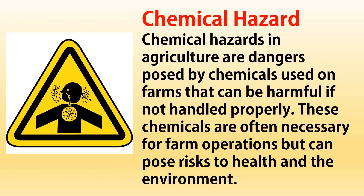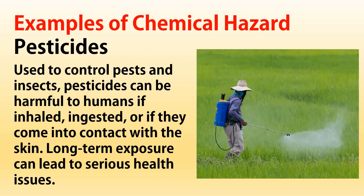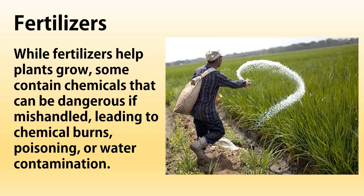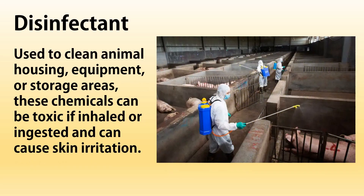Chemical hazards in agriculture are dangers posed by chemicals used on farms that can be harmful if not handled properly. These chemicals are often necessary for farm operations but can pose risks to health and the environment. Examples include: pesticides, used to control pests and insects, which can be harmful if inhaled, ingested, or if they contact the skin; herbicides, which help control weeds but can cause skin irritation, respiratory problems, and other health concerns; fertilizers, which can cause chemical burns, poisoning, or water contamination if mishandled; and disinfectants, used to clean animal housing and equipment, which can be toxic if inhaled or ingested.